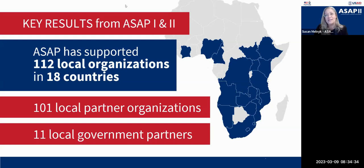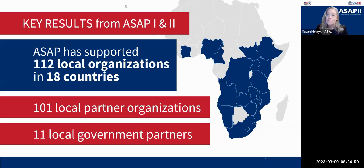A couple of key results from ASAP1 and ASAP2: we're really proud to have worked with 112 local organizations, including 101 local partner organizations and 11 local government partners with G2G support, across 18 countries. We work mainly in sub-Saharan Africa.